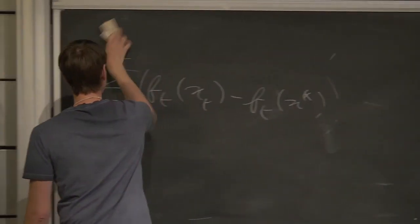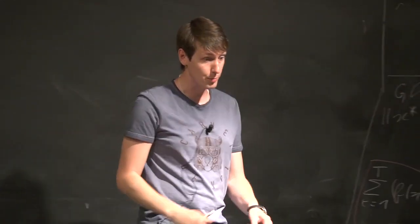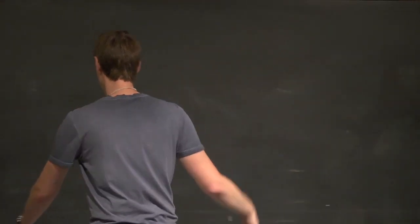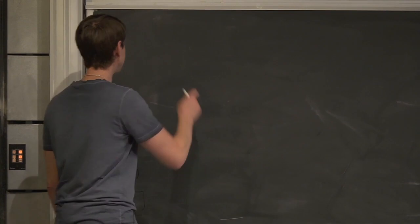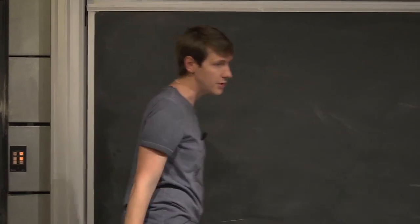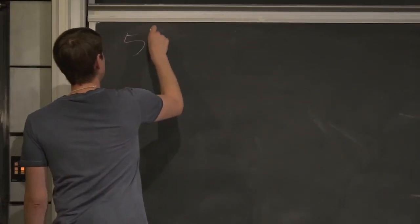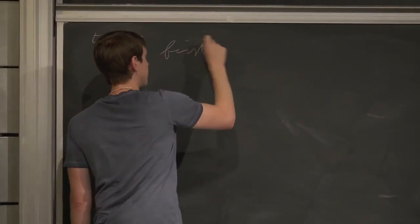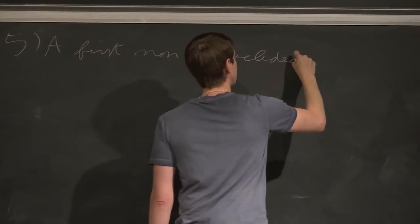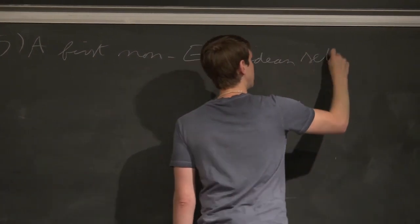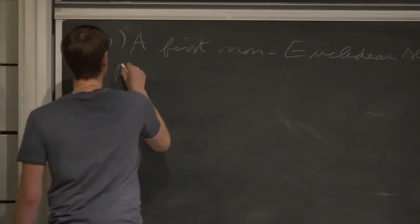So now I'm going to tell you a problem. So far I mostly told you algorithms and what you can do with them. I'm going to tell you a problem and we'll see how to use — or rather not how to use directly what we said, but a variant of it. So this is number five: the first non-Euclidean setting. And this is going to be about prediction with expert advice.